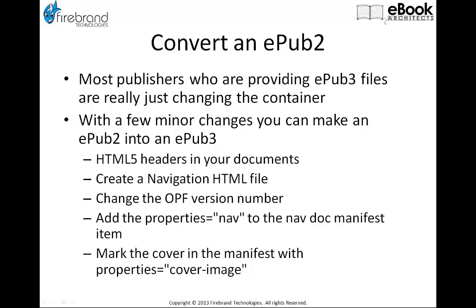What about converting an EPUB 2 document? Most publishers providing EPUB 3 files are really just changing the container of an EPUB 2 into an EPUB 3. With a few minor changes you can make an EPUB 2 into an EPUB 3 — your HTML5 headers have to be put into documents, you need to create a navigation HTML file replacing the NCX table of contents from EPUB 2, you have to change the version number in your OPF to 3.0, and add the properties equals nav attribute to the nav doc manifest item and the properties equals cover-image to the cover image in the manifest.